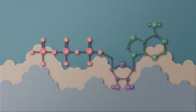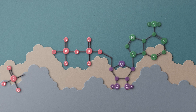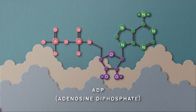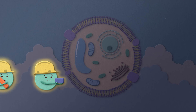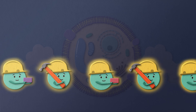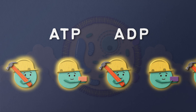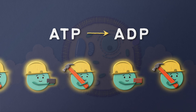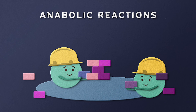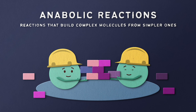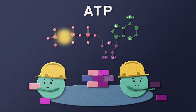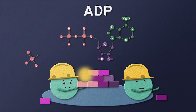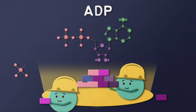When one of these phosphates is removed, energy is released, and ATP becomes ADP, or adenosine diphosphate. Your cells need energy to build new structures and perform various tasks, and this is where the ATP-ADP cycle comes into play. ATP provides the energy for anabolic reactions — those are the reactions that build complex molecules from simpler ones. When ATP donates a phosphate and turns into ADP, the energy released is used for these building processes.